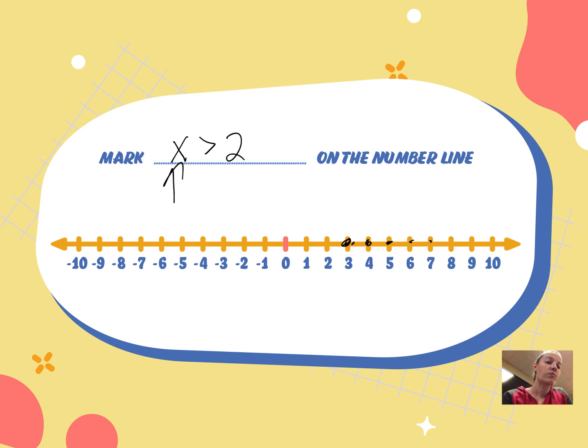But so is 3.1 and 3.2 and 3.3 and 4.5 and 4.6. All these decimals are also greater than 2. Even 2.1 is bigger than 2. 2.2 is bigger than 2. So all these numbers this way are bigger than 2. But because we don't want it to equal 2, then we have to have an open circle.